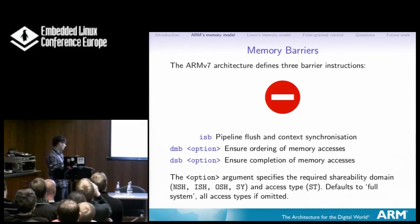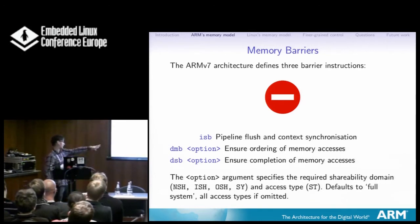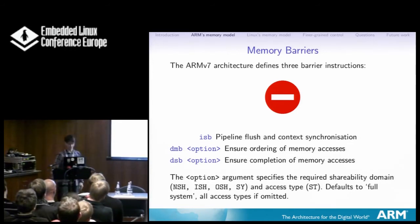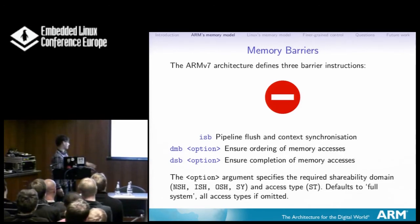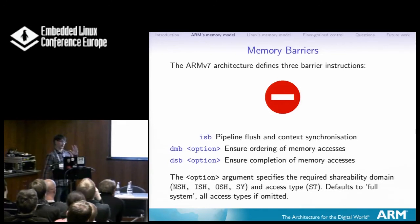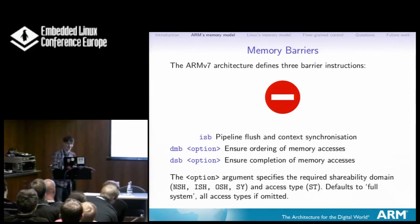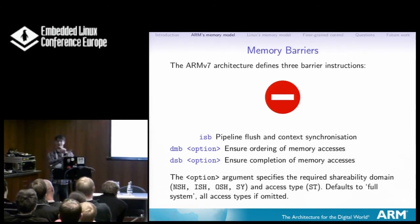The option can be used to specify the shareability domain: non-shareable, inner-shareable, outer-shareable, and full system, with handy three-letter mnemonics. Our architect was referring to that as NHS the other day — hey, what did they get rid of the NHS? You can also specify an access type: stores only. If the access type is absent, it's full system. You mix these together, so you get things like ISHST for inner-shareable stores only, which is a little hard to get your head around. GAS also accepts different syntax for these.